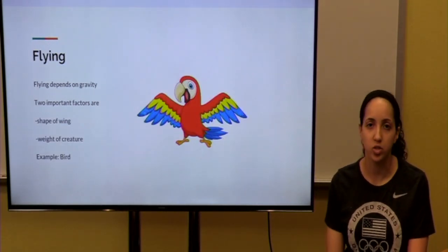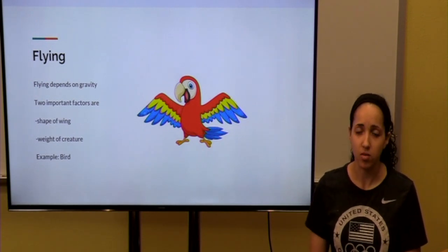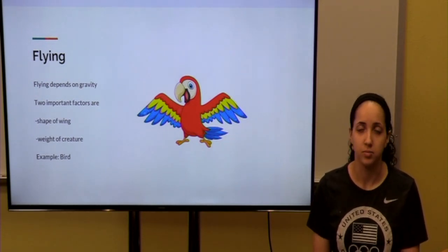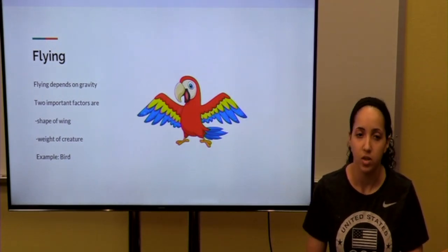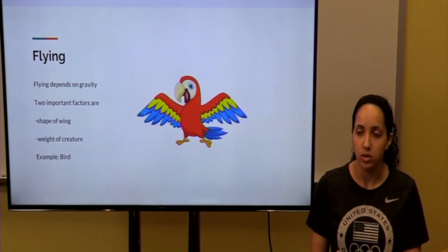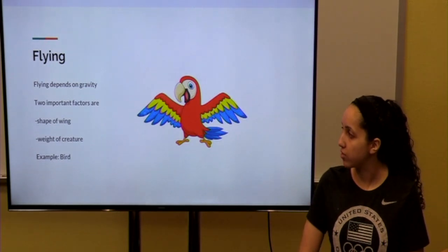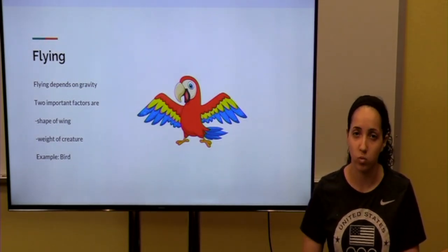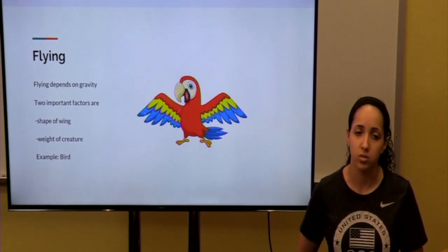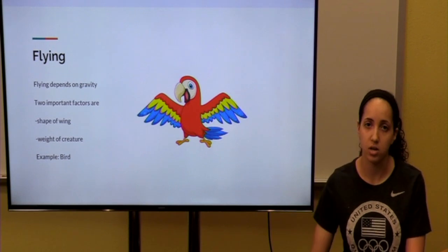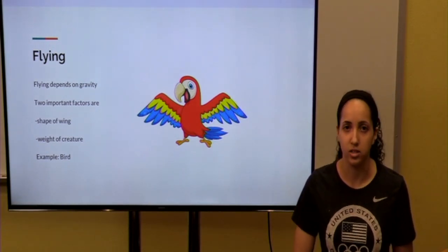The last type of locomotion is flying. Flying depends on gravity. So, to go against gravity, it's really important to look at the wing shape, and it also is important about the weight of the animal that is flying. An example of an animal that flies is birds.